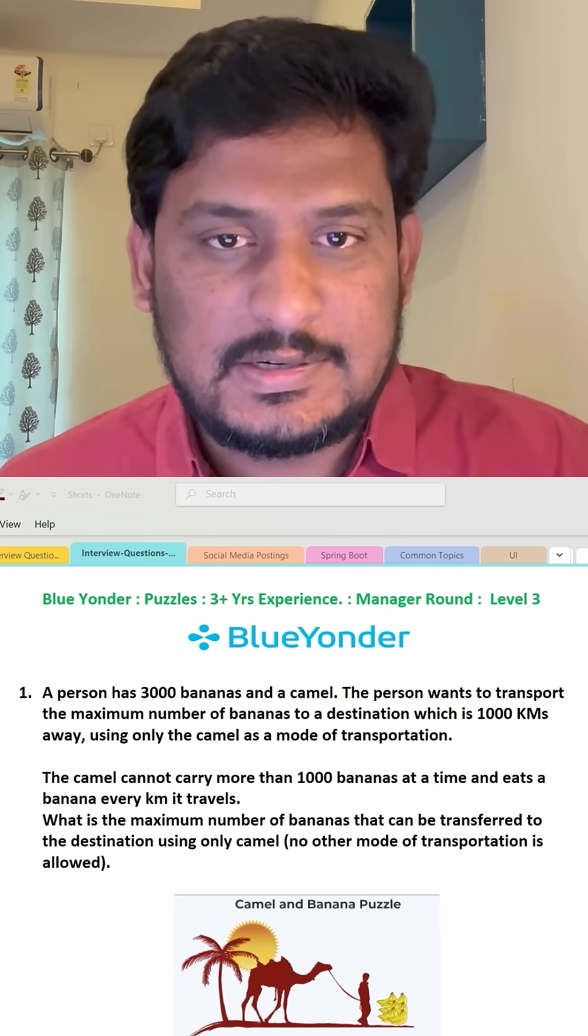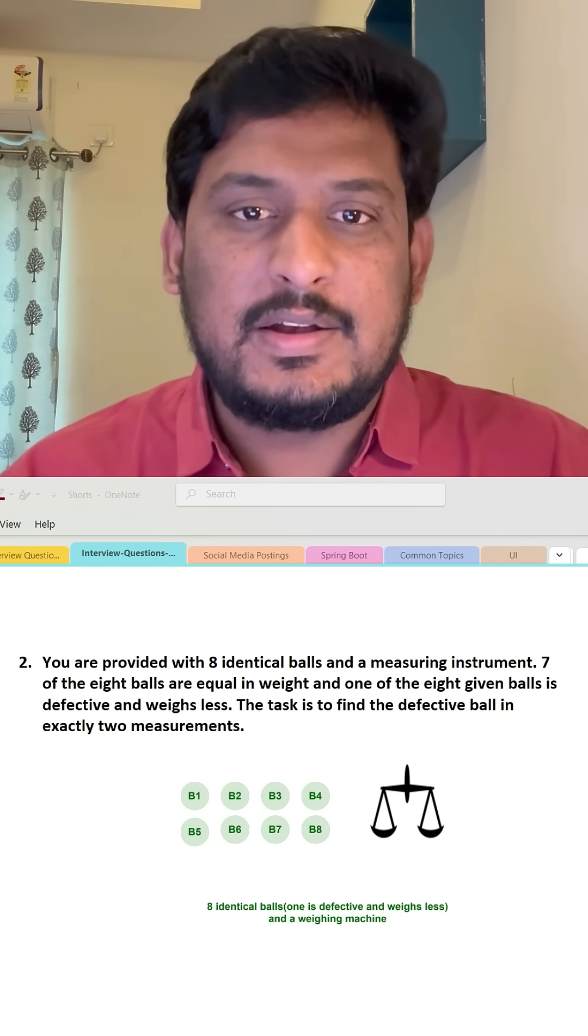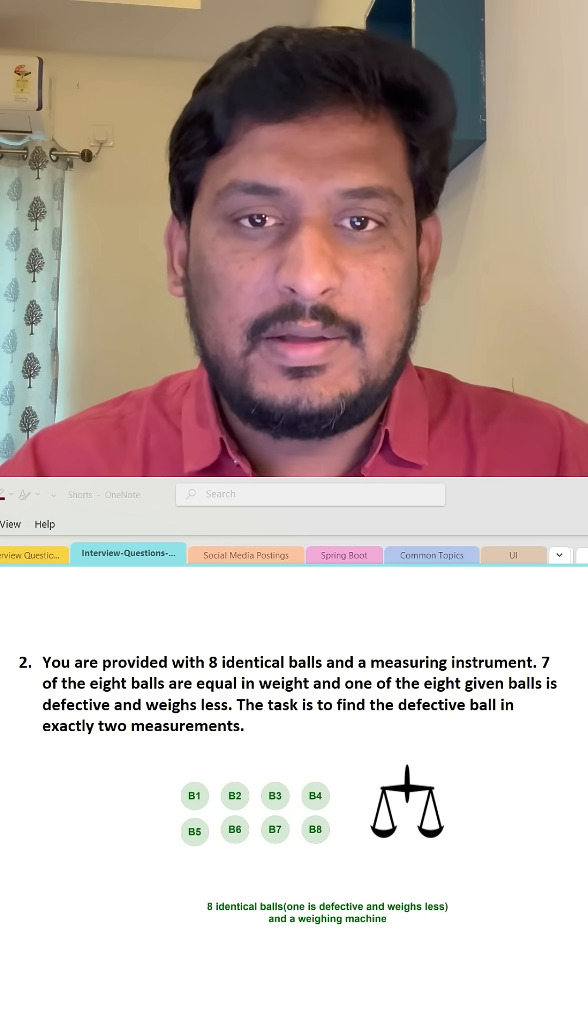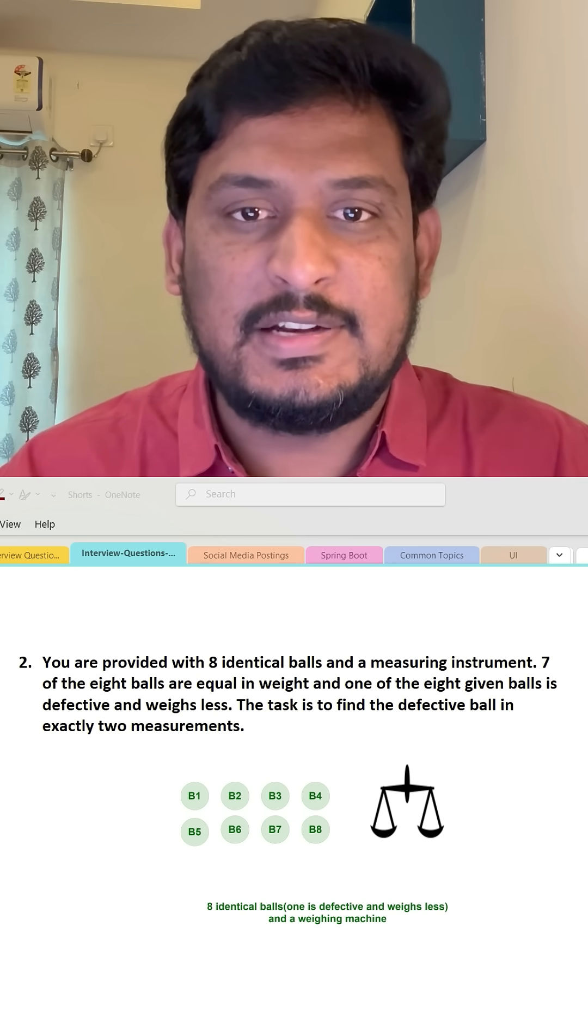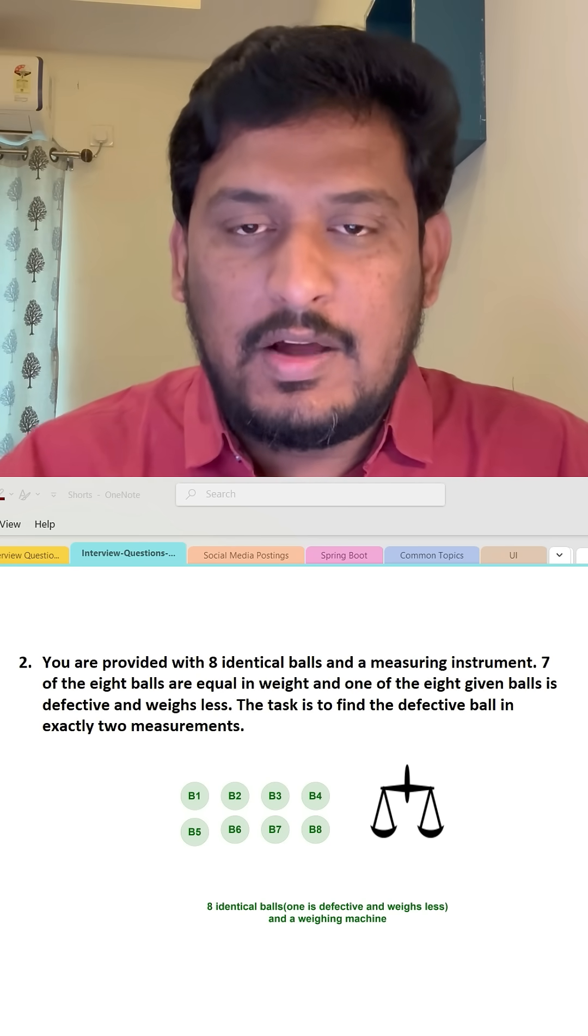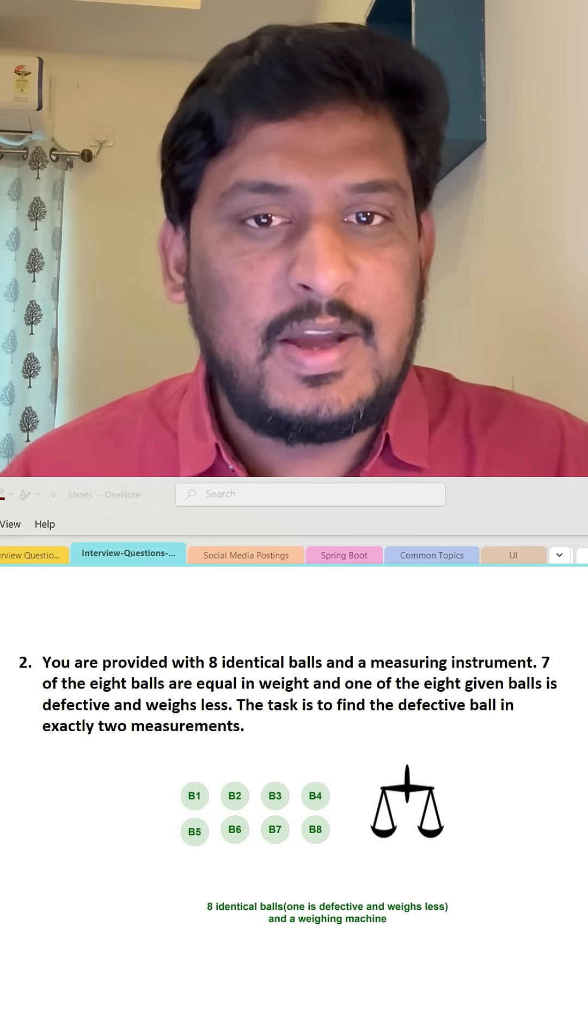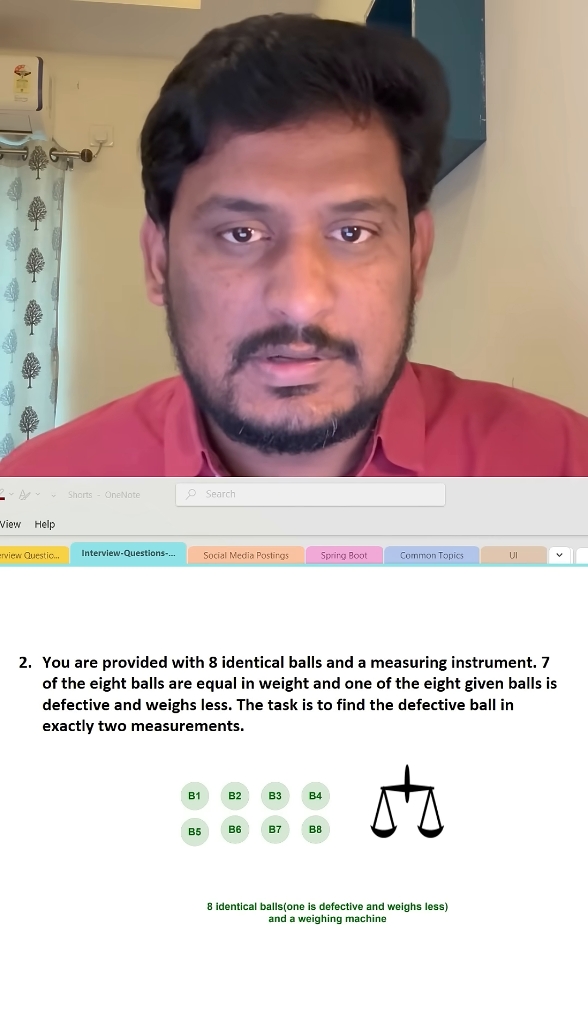That's the first puzzle. The second puzzle: We have eight identical balls. Eight balls look the same, but out of eight, seven have equal weight and one ball has less weight. We can consider it as a defective ball. Now, we have to identify the defective ball using a weighing scale within two attempts.